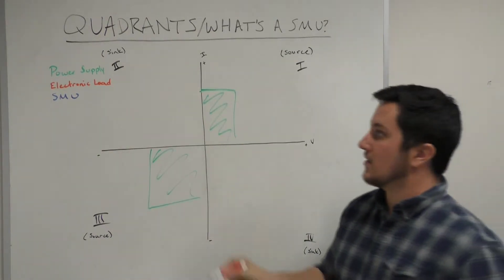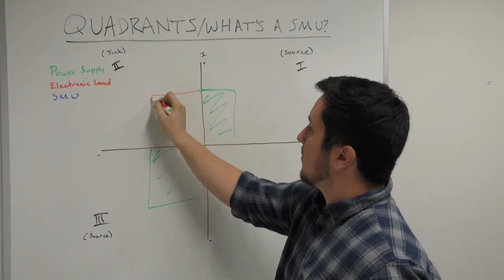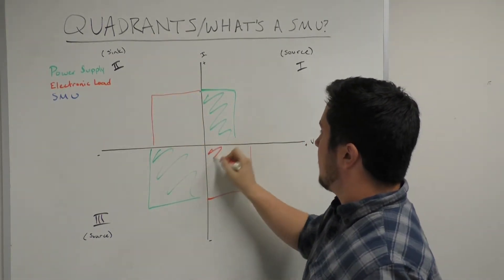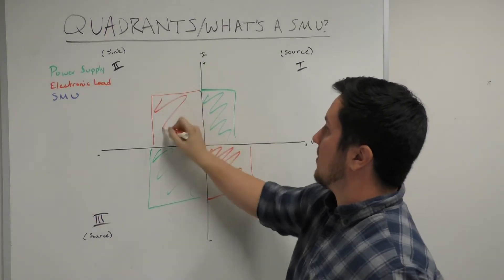An electronic load, alternatively, operates in quadrants 2 and 4 because it typically can only sink.